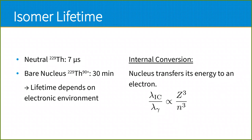This is because of an effect called internal conversion. When the nucleus decays, it does not emit a gamma ray; instead, it transfers its energy to an electron. For heavier isotopes, this is the dominant decay mechanism of the isomers, because the ratio of internal conversion to gamma ray decay scales with the nuclear charge cubed, and also with the principal quantum number cubed, meaning that core electrons are more likely to participate in this internal conversion scheme.